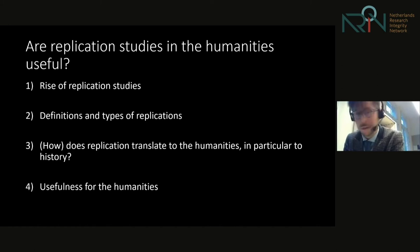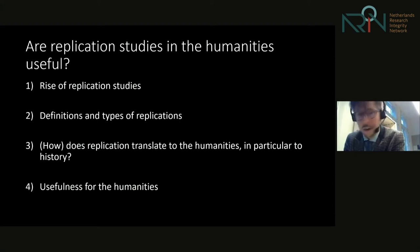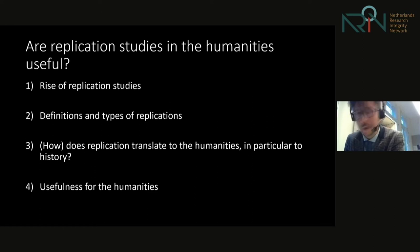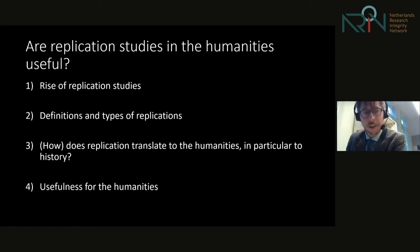First, I will have a look at the rise of replications over the past decade. Secondly, I will look at the definitions and variable types of replications. Thirdly, I will see if and how these notions translate to the humanities. And fourth and finally, I will answer my main question and sketch what I see as the possibilities for replication in the humanities. In discussing this question, I will draw my examples solely from my own discipline, history, and for now I will assume that it stands for most humanities disciplines.